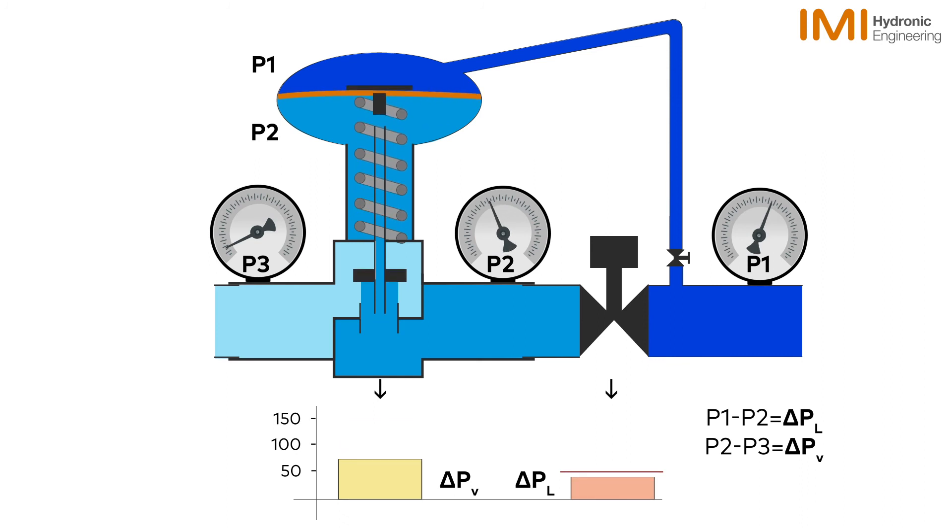It can maintain this control until the point where P1 reduces below the minimum required differential pressure for the circuit. Watch again as we see the valve reacting to changes in available pressure.